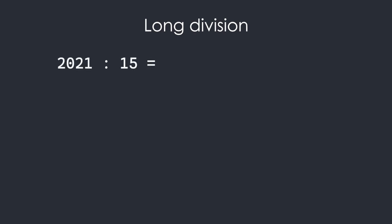What we can do is use the long division technique from math that you most likely learned in school. Here's a quick example: say we want to divide 2021 by 15. We take the first two digits, 20, and divide them by 15, which gives us the first digit of the quotient, 1, and the remainder, 5. Next we take the remainder and append the next digit from the dividend, giving us 52. We divide again and repeat these steps until we are out of digits.